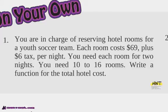Did you get it? Each room is $69 plus $6 in tax per night. So it's $69 plus $6 times x, and you need at least 10 to 16. Is this domain continuous or discrete?